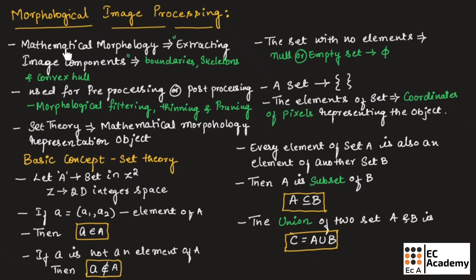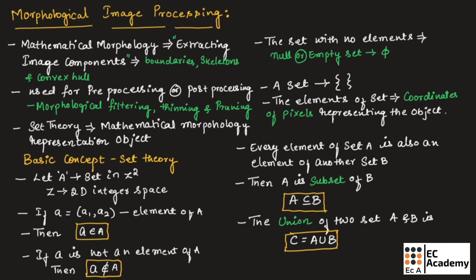In image processing, mathematical morphology is used as a tool for extracting image components that are useful in representation and description of regions such as boundaries, skeletons, and convex hull.